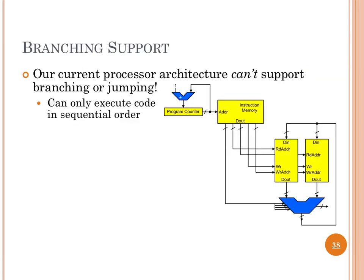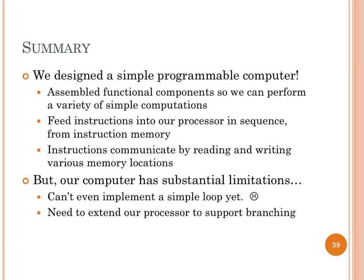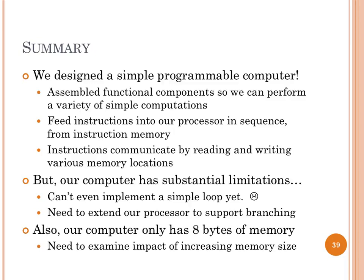Our processor is limited because it doesn't support branching, and the hardware design limits the kinds of programs you can write. Interestingly, there are processors — like GPUs — where branching is avoided at all costs because it slows things down. That's why we have speculative execution, and that's why we have Spectre. Our processor needs to be extended to support more sophisticated programs. Next lecture we'll start addressing these limitations. Also a reminder: there's no class on Friday, so the next class is Monday.